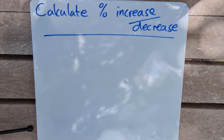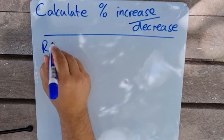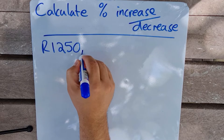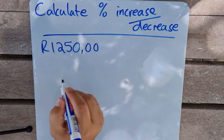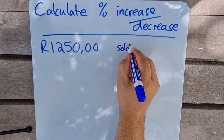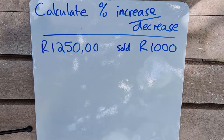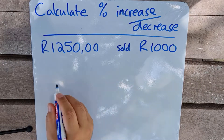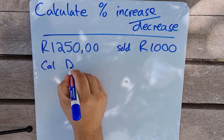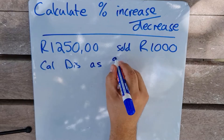Let's look at an example: an item that previously cost 1250 Rand was sold for 1000 Rand. We want to calculate the discount as a percentage.